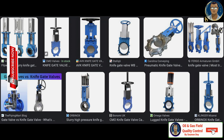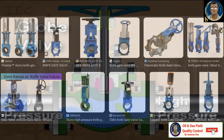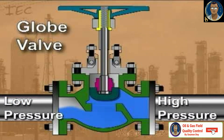Knife gate valves are used for controlling flow of media containing solids. The knife gate valve features a thin gate controlled through linear action that cuts through materials and creates a seal. These valves are not suited for high pressure but are ideal for use with grease, oils, paper pulp, slurry and wastewater. Globe valves are typically applied in modulating control operations and are available in three body types: T-body, Y-pattern and angle body.